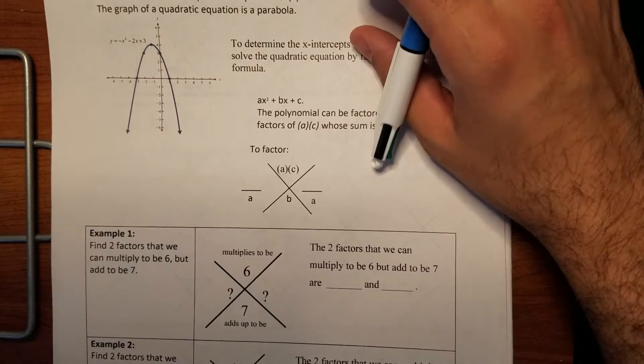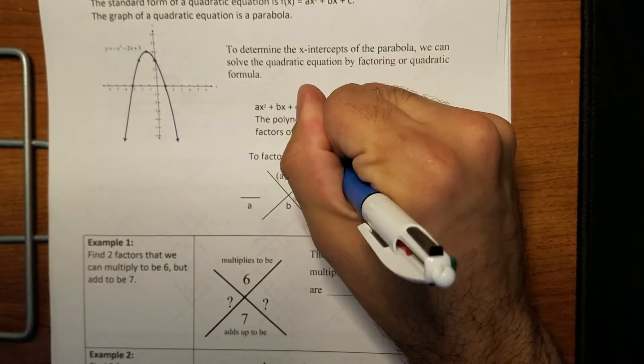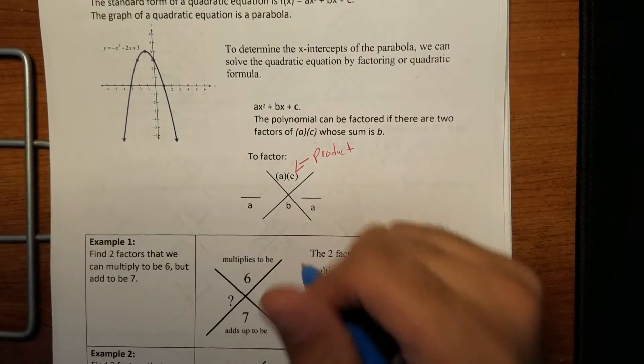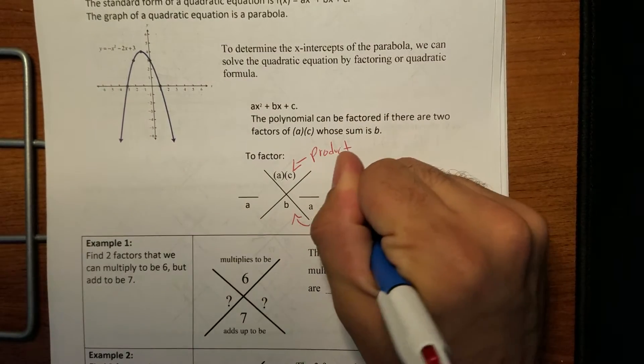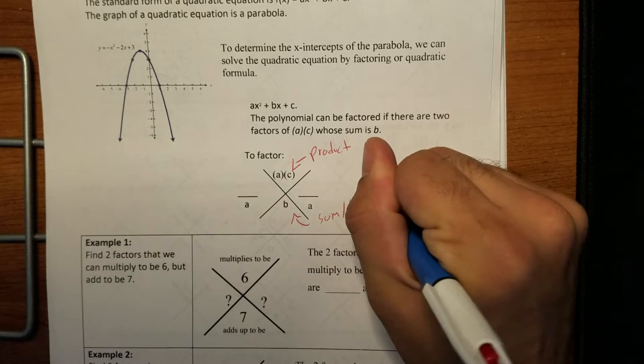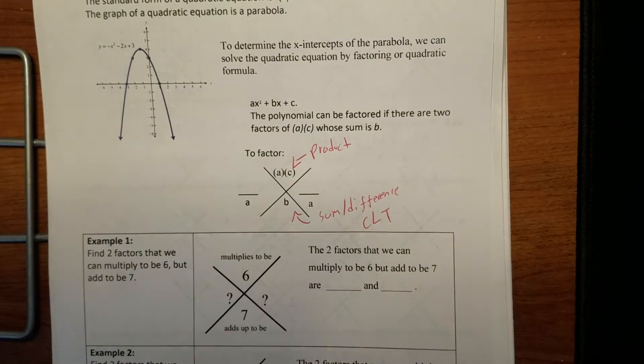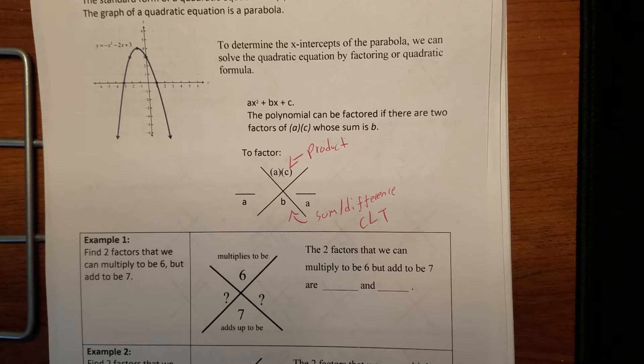Now, I mentioned this on the previous video where AC is the product. The product of these two values and B you can see it as the sum, difference, or you can just see it as combined like terms. You can see it either way. Remember, it's only a difference when one's positive, one's negative. Sum when they're both positive or both negative, or combined like terms, like at the end of the day, just put them together. That's basically what it means.